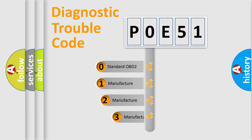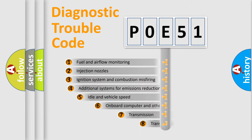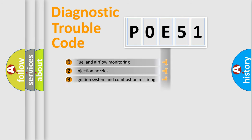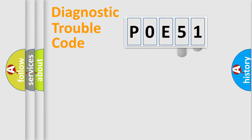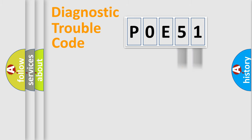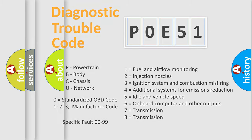If the second character is expressed as zero, it is a standardized error. In the case of numbers 1, 2, or 3, it is a manufacturer-specific expression of a car-specific error. The third character specifies a subset of errors. This distribution is valid only for the standardized DTC code, and only the last two characters define the specific fault of the group. This division is valid only if the second character is expressed by the number zero.